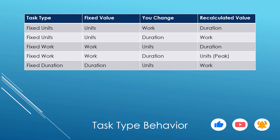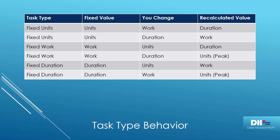On a fixed duration task, the duration is locked. If you change the units, Microsoft Project will recalculate the work — because it's the only number left. On a fixed duration task, the duration is locked. If you change the work, Microsoft Project will recalculate the units and store it in the peak field — because it's the only number left. In these six examples, Microsoft Project's behavior is very consistent and predictable. But what happens if you change the locked number?